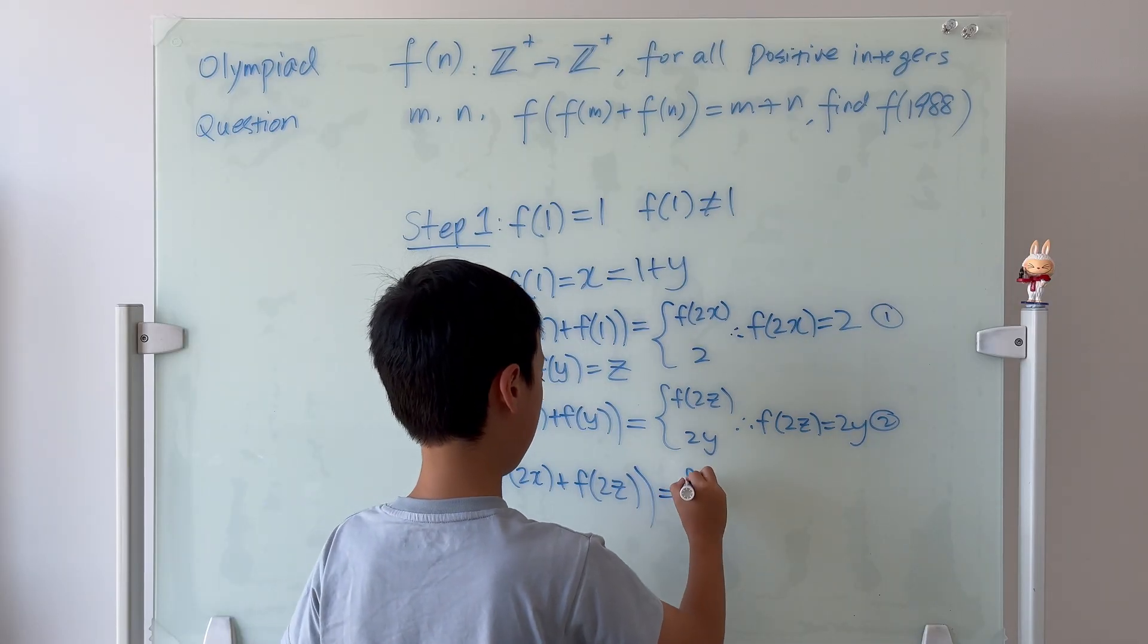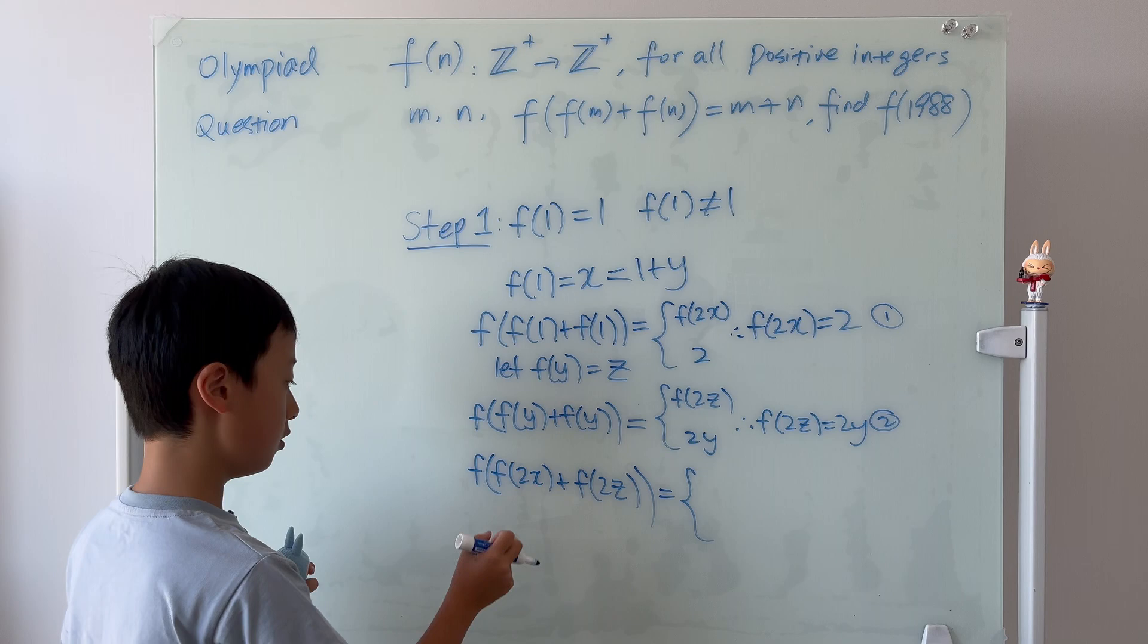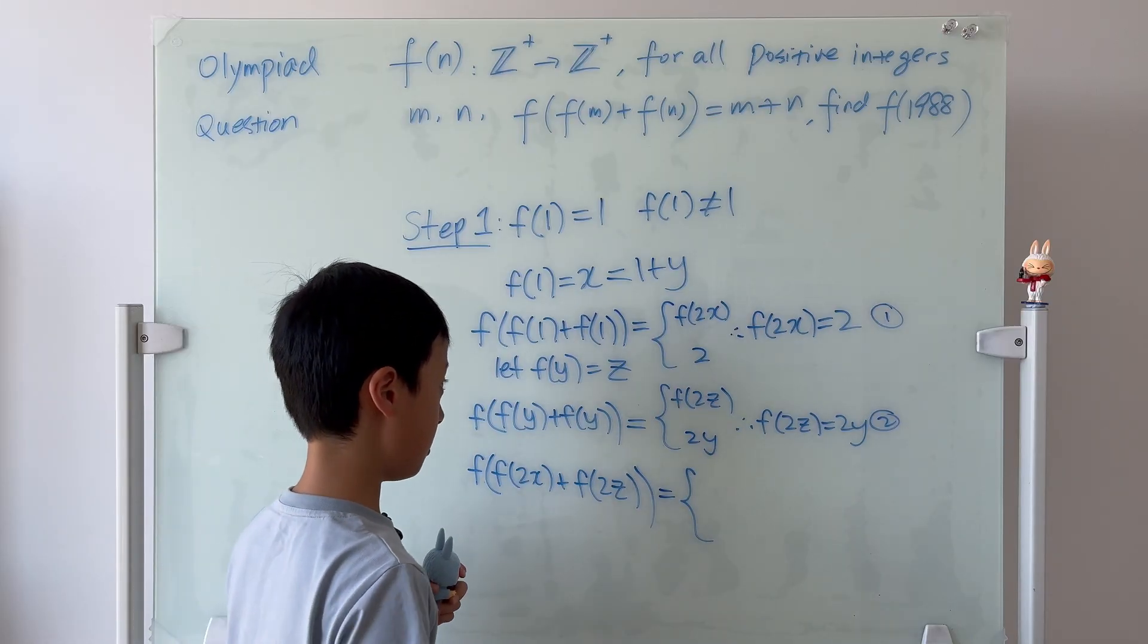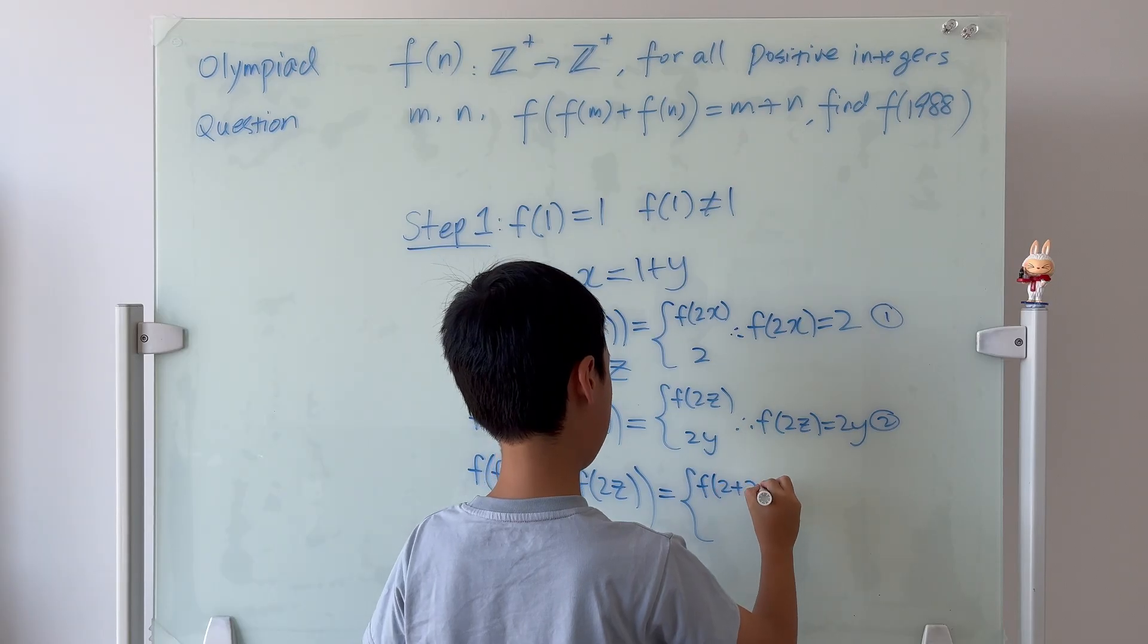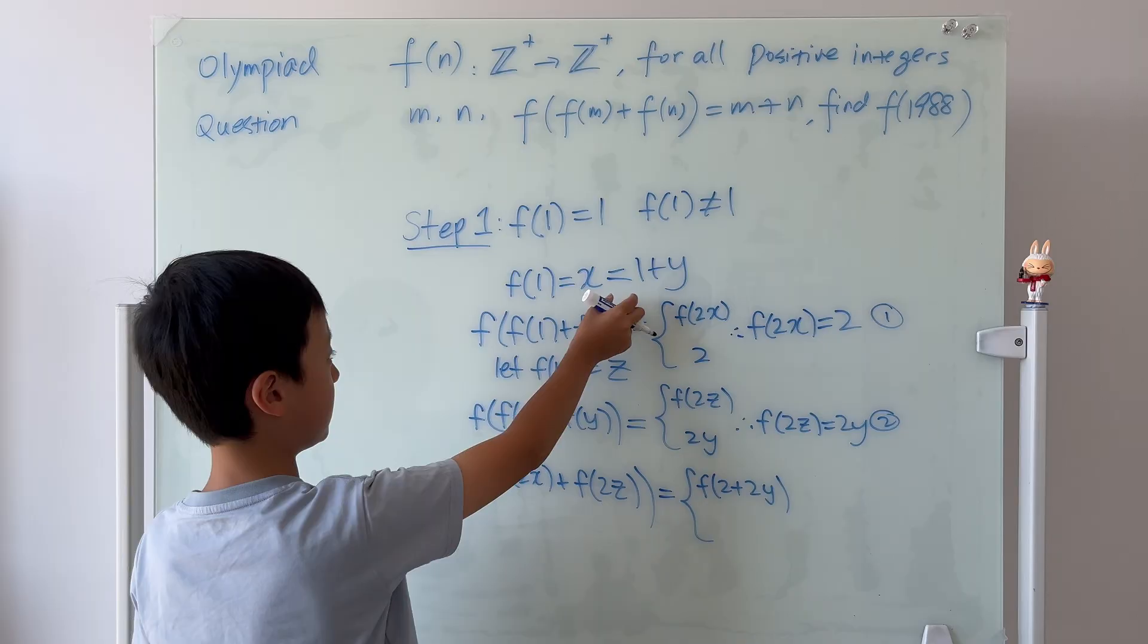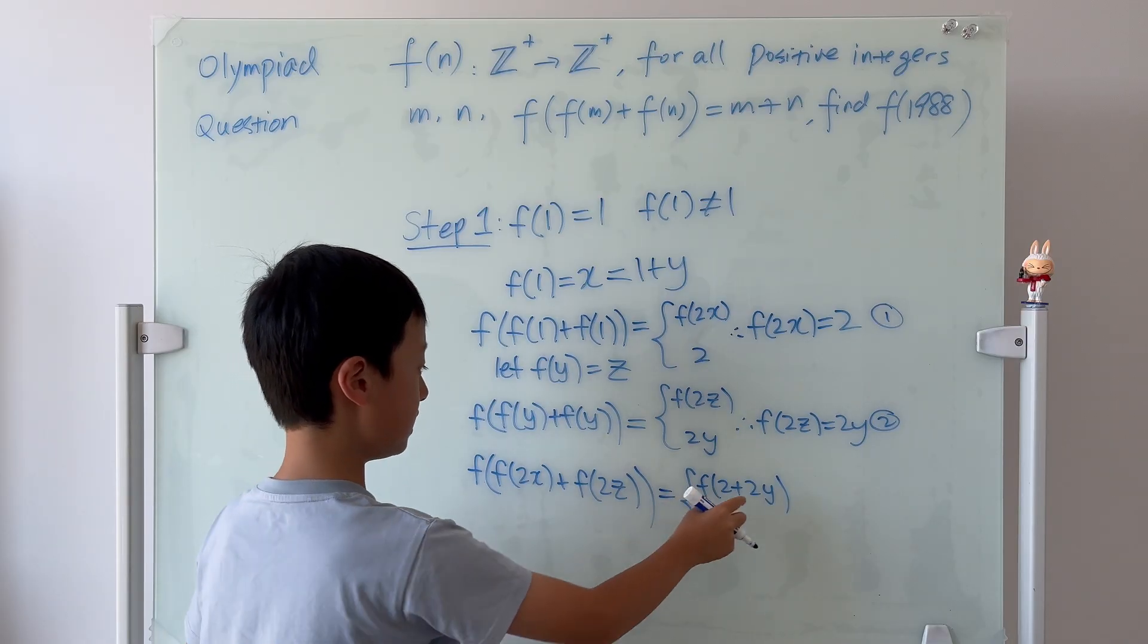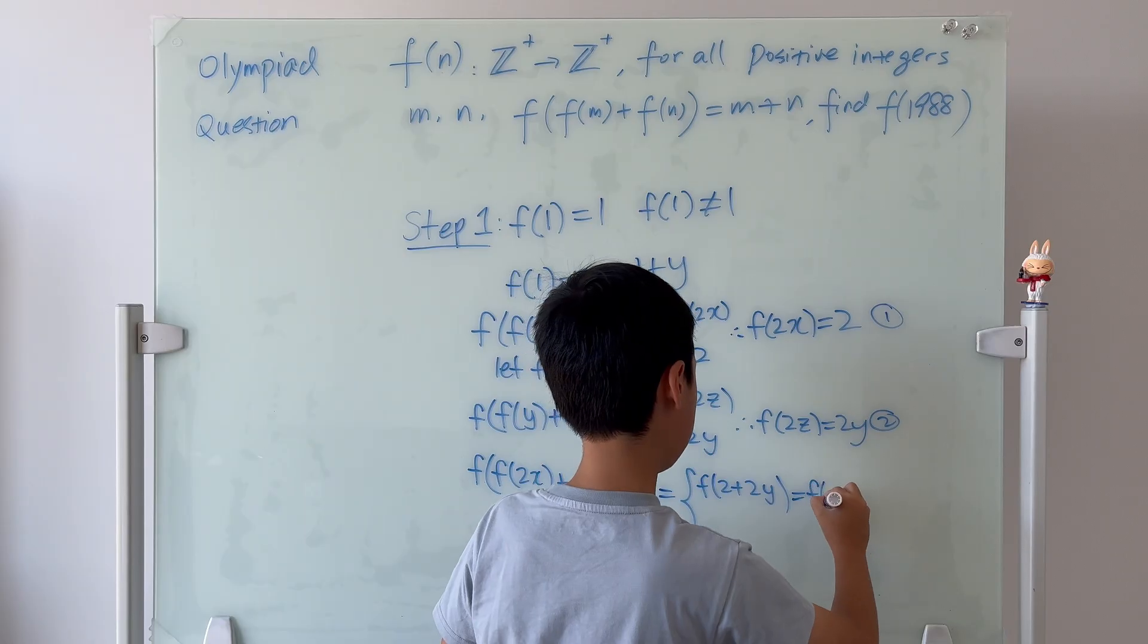This is equal to, also two solutions. The first one will be, we know that f of 2x is equal to 2 and f of 2z is equal to 2y. So, it will just be f of 2 plus 2y. And, we recall that x is equal to 1 plus y. So, 2x is equal to 2 plus 2y. So, then, this is just 2x. So, it's just f of 2x.